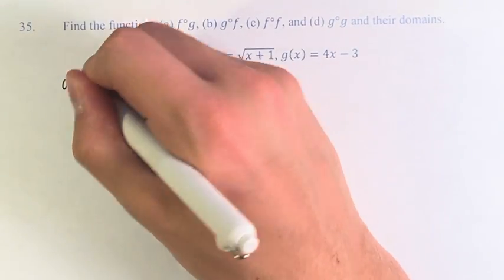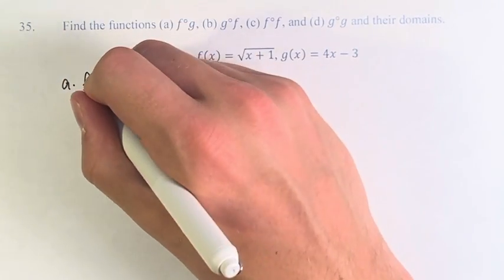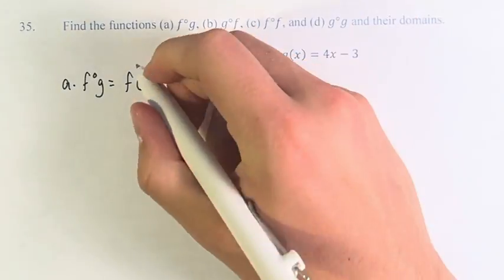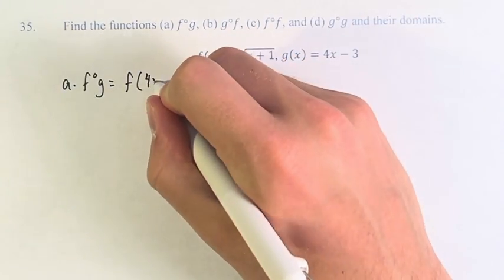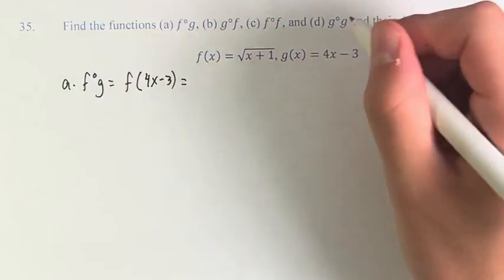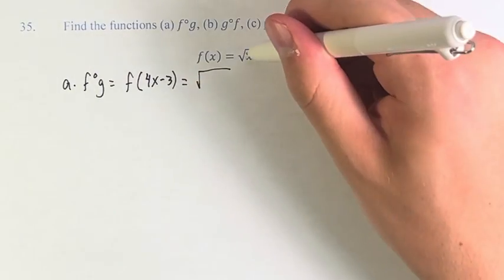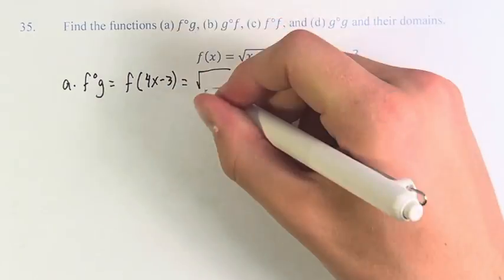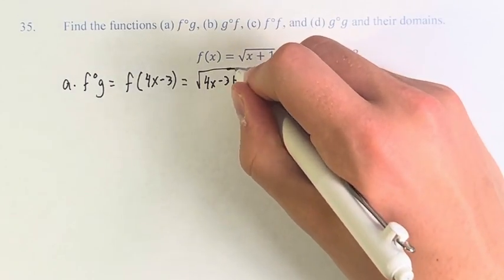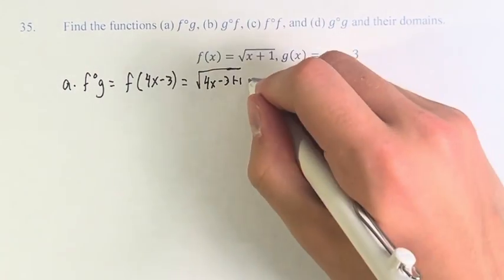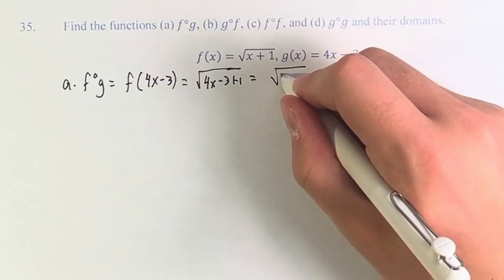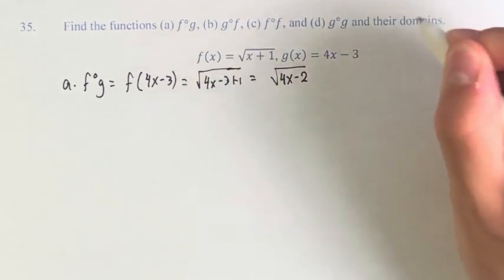So first we're going to start with f of g. This is f of g of x, which is 4x minus 3. So we just have to plug this in. The square root of x becomes 4x minus 3, and then we add 1. Simplifying this, we get the square root of 4x minus 2.